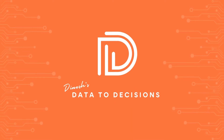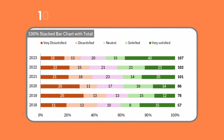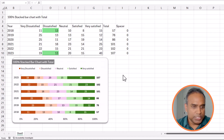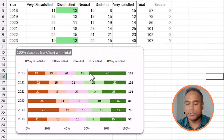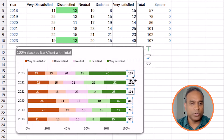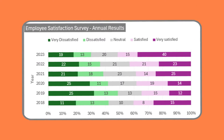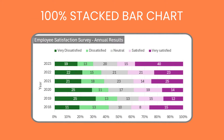Welcome to another video on Data to Decisions. In today's video I'll be building a 100% stacked bar chart with the total as you see on screen — so not only do we have the 100% stacked bar chart, but we will also have the total series that shows the total count for each category. In the previous video we went through step by step how to create a stacked bar chart, so please go back and watch that video. In this video I'll focus more on how to get the total added to that chart.